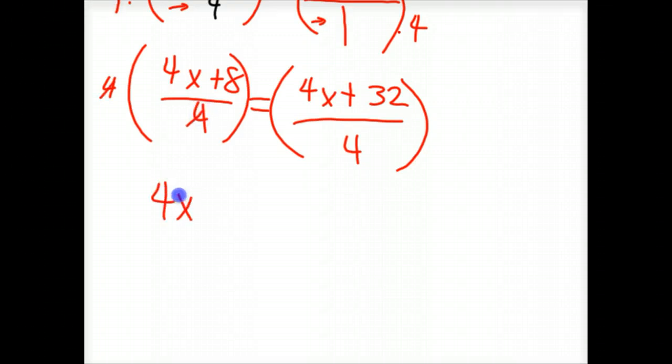So you have 4x plus 8 equals, and then you multiply this side—whatever you do to the left side you do to the right side. We're multiplying both by 4. And then you have 4x plus 32, because the 4s cross out over here, because this is 4 over 1.